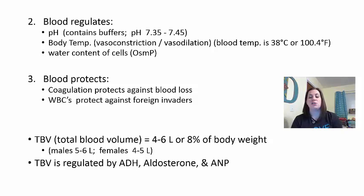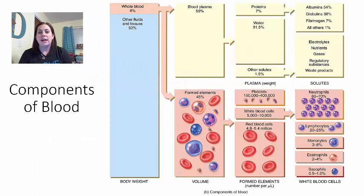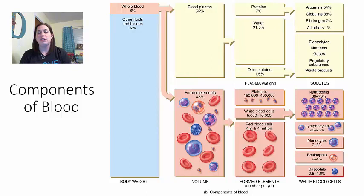When we look at the components of blood—summarized in a chart on page 663 of your textbook—blood is a little more viscous and sticky than water. Of total blood, 92% of your body weight comes from other fluids and tissues; only 8% is blood. Breaking blood apart, 55% is blood plasma, which is the liquid part.